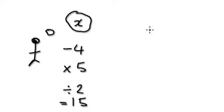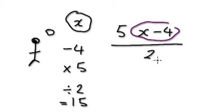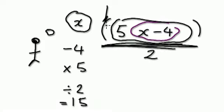What number was I thinking of? The way to do this: I'm thinking of a number, I take away 4, and I need to know what this is first before I multiply it by 5 — that's why we need brackets here. And then we divide it by 2. Because of this fraction line, it means everything above it, so we don't need those two extra brackets. Let me start again.